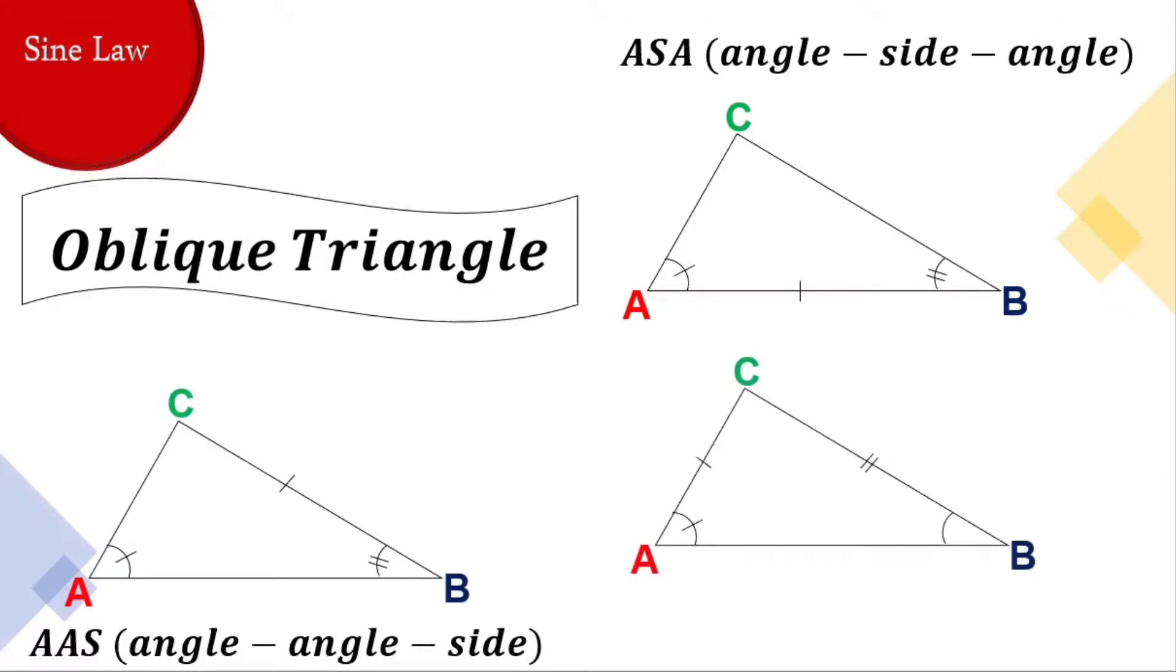The measurements of two angles and a side that is not between the known angles are already given. Lastly, we have here, side-side-angle. We know the measurements of two sides and an angle that is not between the known sides.